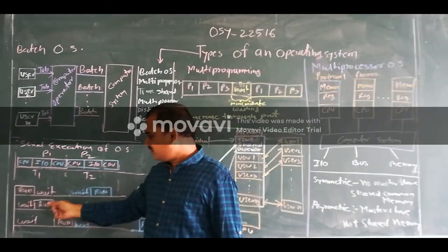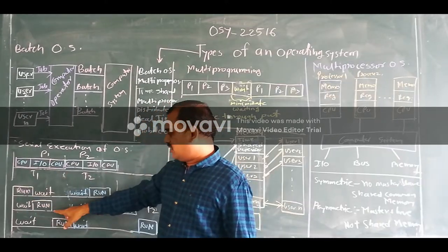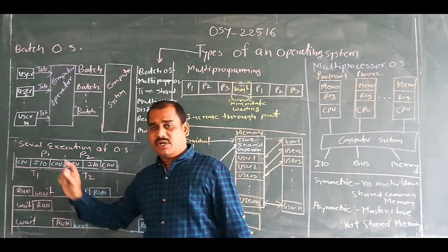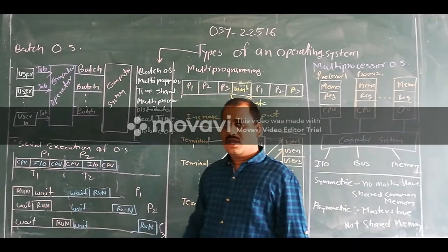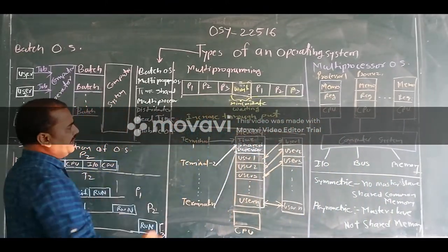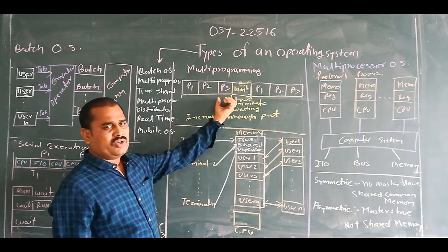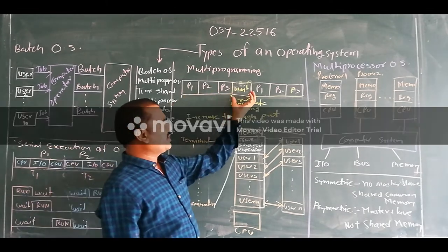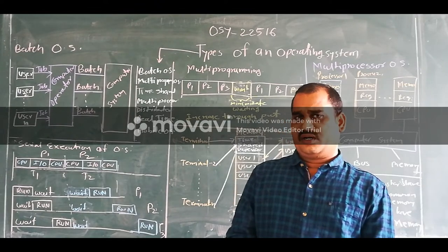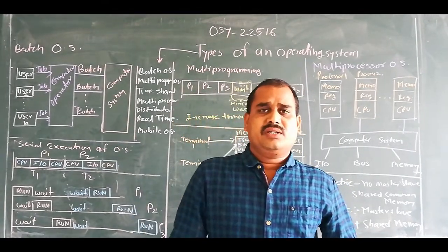In this way, instead of waiting for the whole process completion, the process P2 will be allocated the CPU directly after the waiting state of process P1. So here, the waiting time must be minimized. We can clearly see that in a multiprogramming system, firstly P1 utilizes CPU, then P2 utilizes CPU, and P3 utilizes CPU. After that, the wait state is there, and then P1, P2, P3 simultaneously get the CPU and all accomplish their tasks. In this way, the multiprogramming operating system minimizes waiting and increases throughput.